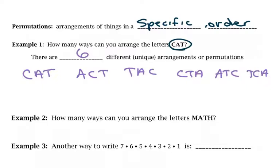Example two: how many ways can you arrange the letters in math? You can try to list them all, but the more letters you get, the more different arrangements you can have. So there's another way to do this. I think about it like this: there are four letters, so I'm going to have four slots. In the first slot, I have four letters to choose from, so I've got four choices.